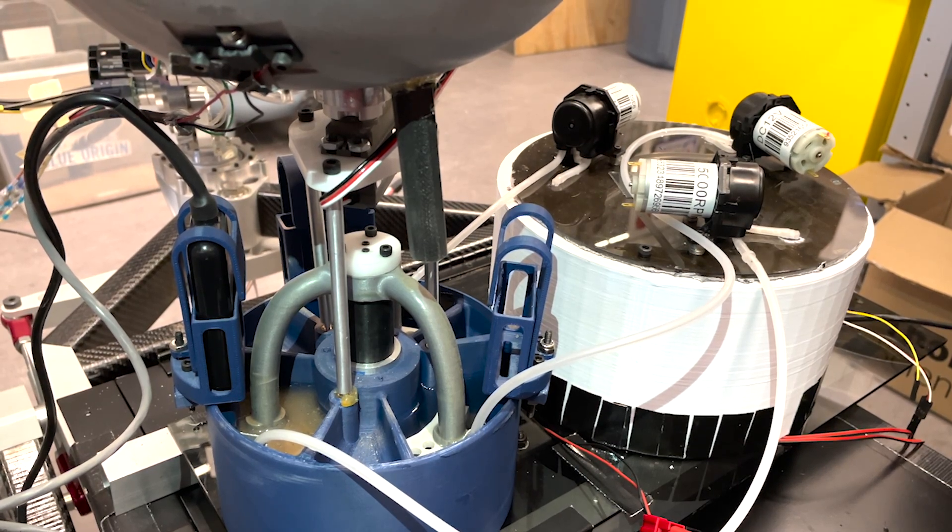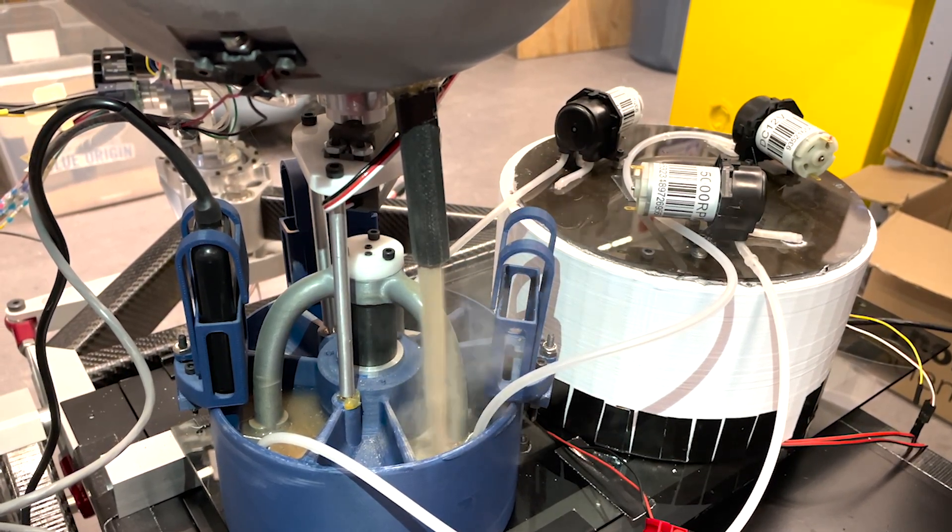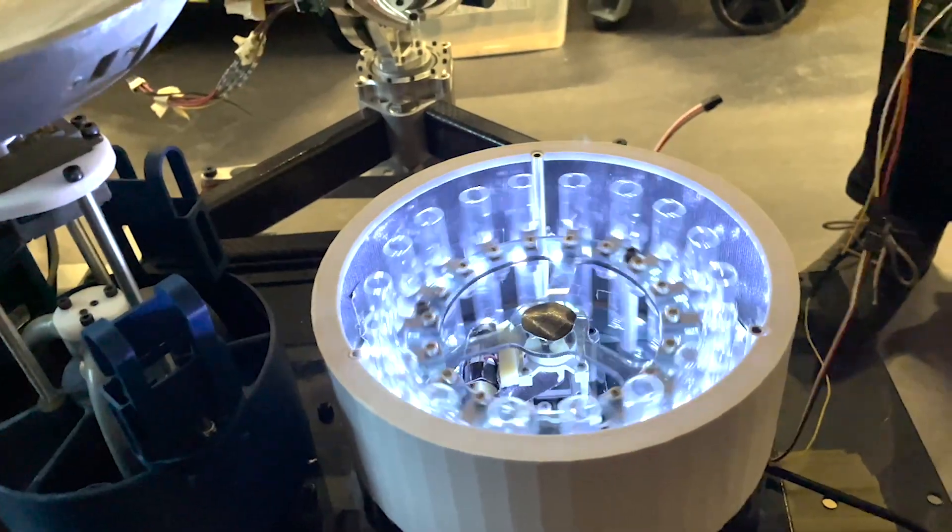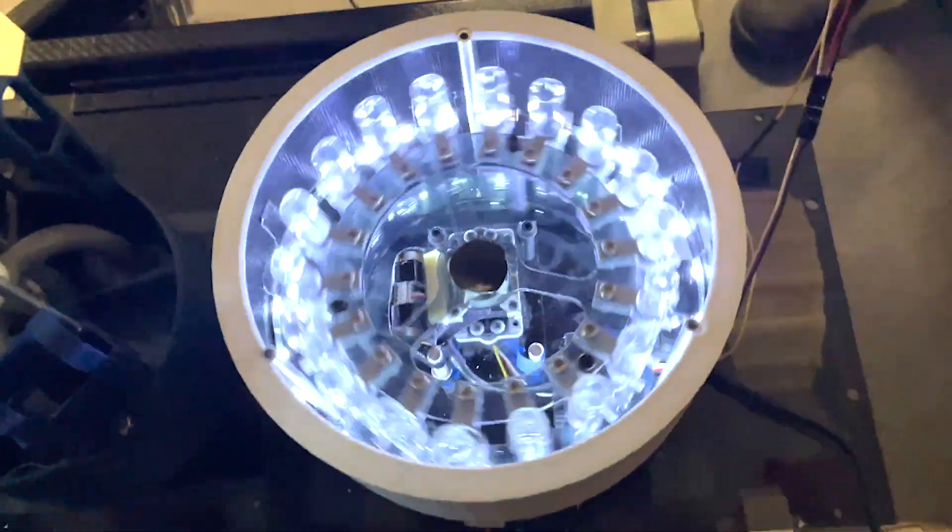In the mixing chamber, a crankshaft piston mechanism creates a soil and water mixture. The mixing chamber's three isolated sections prevent cross-contamination. Our next task is to analyze and perform life detection tests.